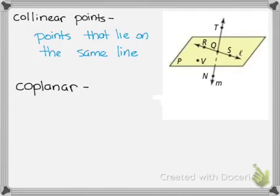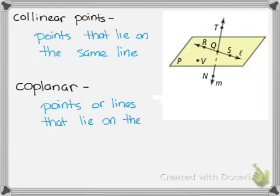Collinear points are just points that lie on the same line. And then we also have coplanar. Coplanar are points or lines that lie on the same plane. So an example of collinear points in the following picture would be, let's see, T, Q, and N. Those are all on the same line. So those are collinear points. Alright. We have T up here, Q, and N. They're all on line M.